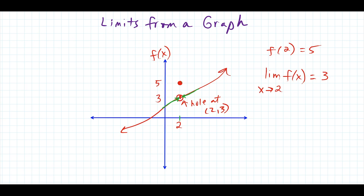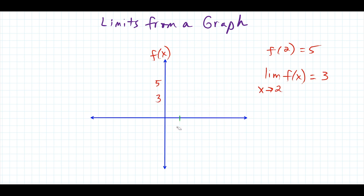The function value is more of just a distraction. That would be the second case. When you have a hole in the graph, sometimes we'll call that a removable discontinuity. The next case I want to look at is what happens when we have a jump in the graph.